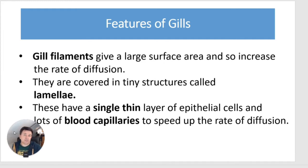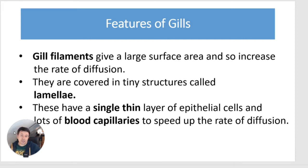To summarize: gill filaments give a large surface area, increasing the rate of diffusion. They are covered in tiny structures called lamellae, which increase the surface area even further. They also have a single thin layer of epithelial cells and lots of blood capillaries to speed up the rate of diffusion.